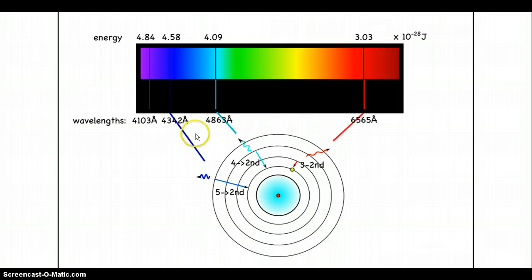Over here with the cyan, or this blue-green, the electricity was exciting the electrons that were sitting on the second energy level up to the fourth energy level. When it relaxes, it comes back down to the second energy level, and in the process releases all that energy in the form of this blue-green color. This goes on and on.